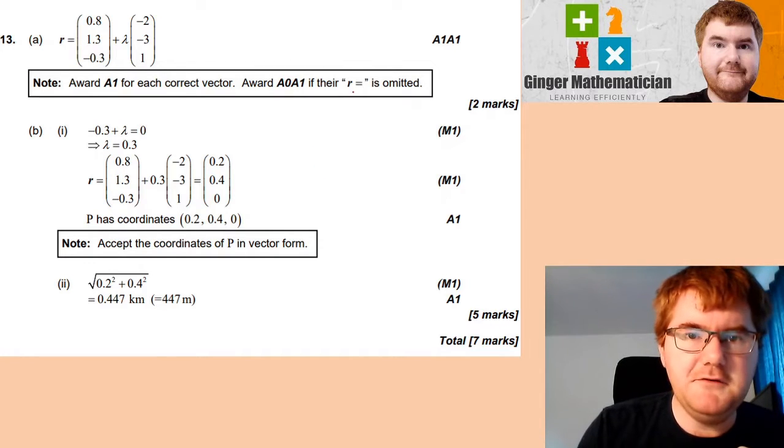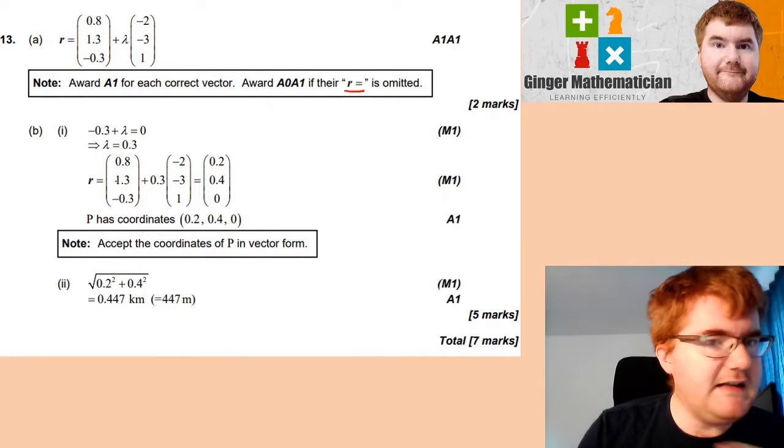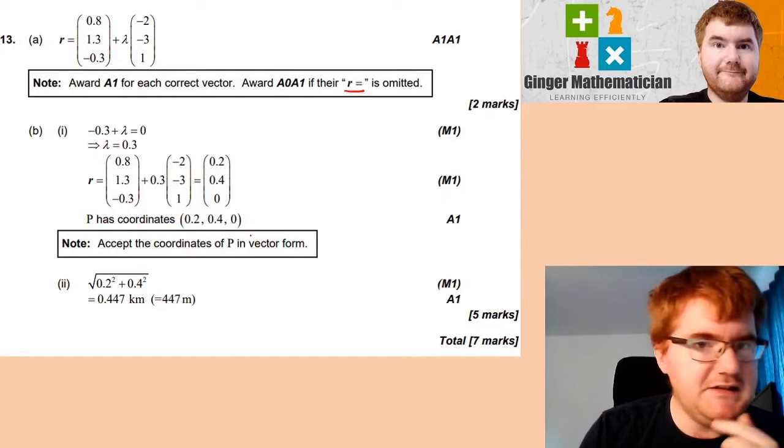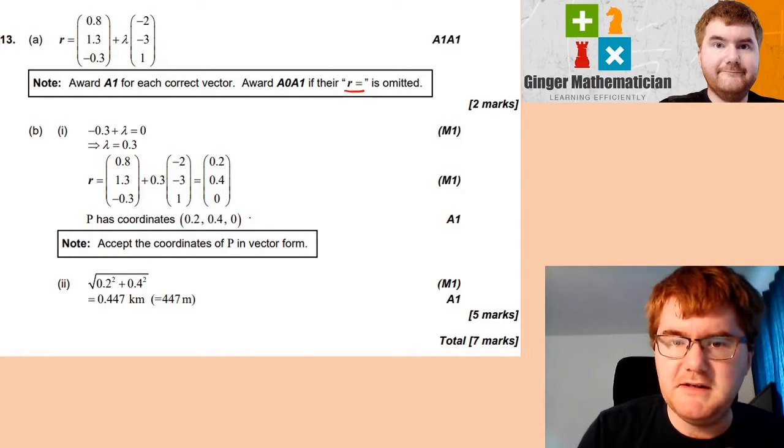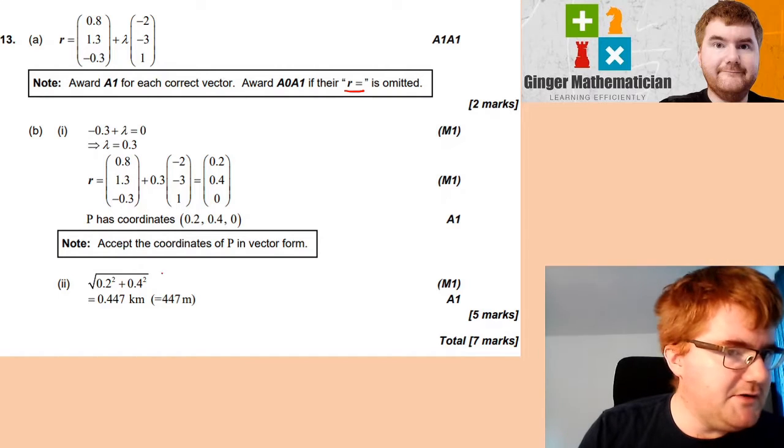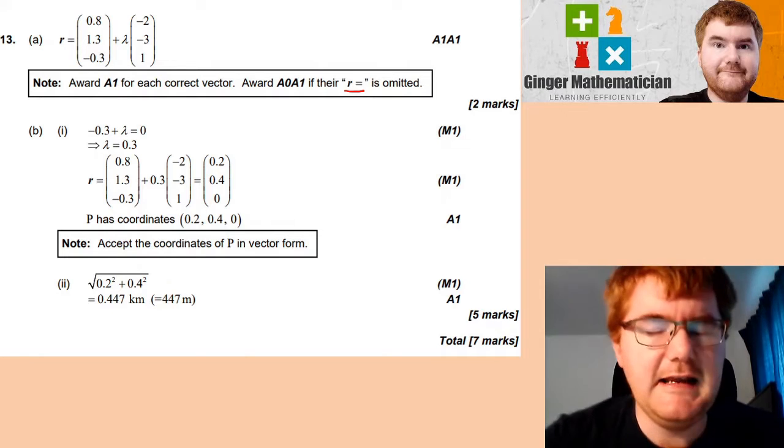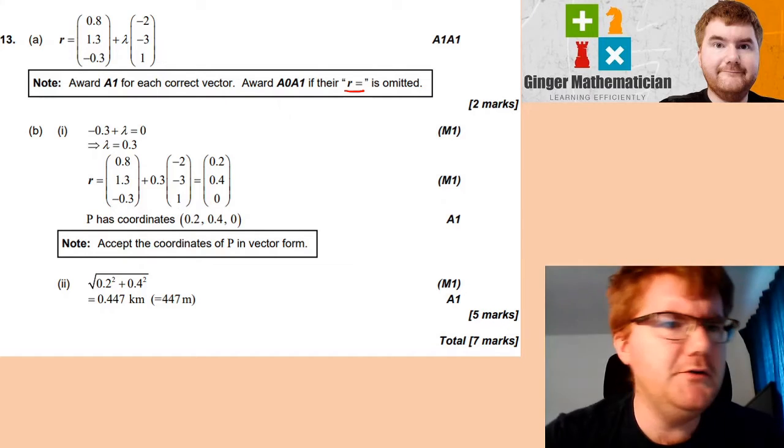You can have a look through the mark scheme and see where you pick up the marks. Just a highlight: if you do not have this R equals at the start, then you lose that accuracy mark. Notice I've got the lambda 0.3 method mark, written out the vector equation method mark. You do need to write this as a coordinate, but they do accept the coordinates of P in vector form. Notice I've written out my Pythagoras for the method mark and worked out the correct answer. Make sure you're being very precise in the way you're writing this so you're picking up all seven marks.